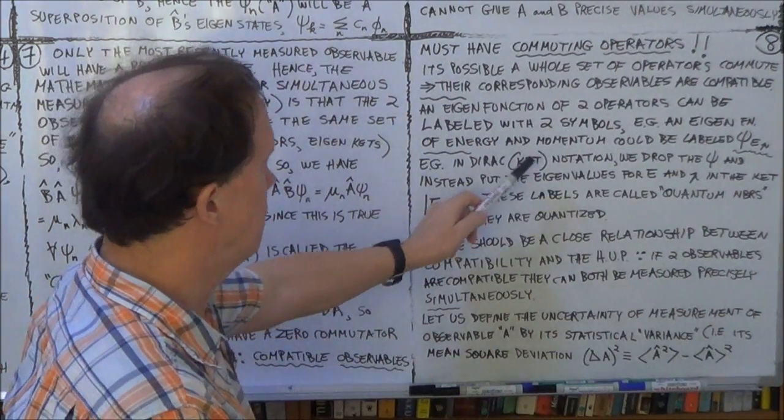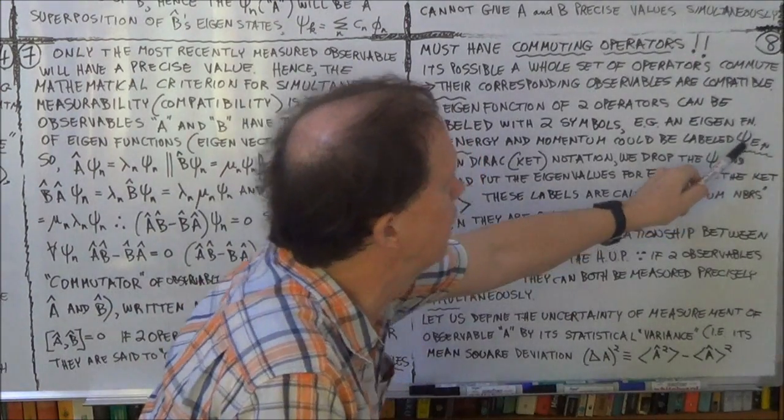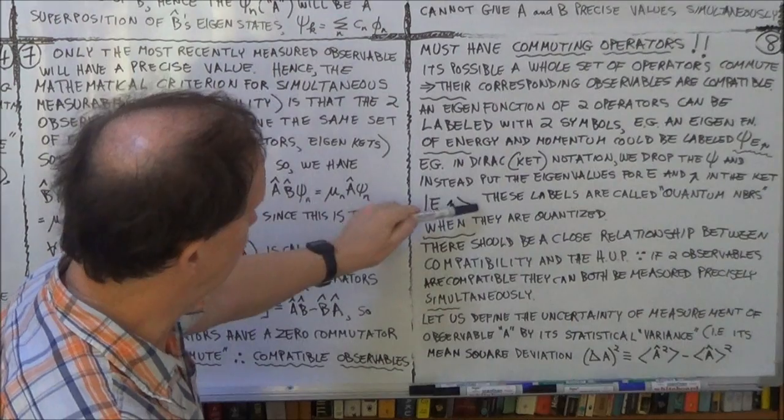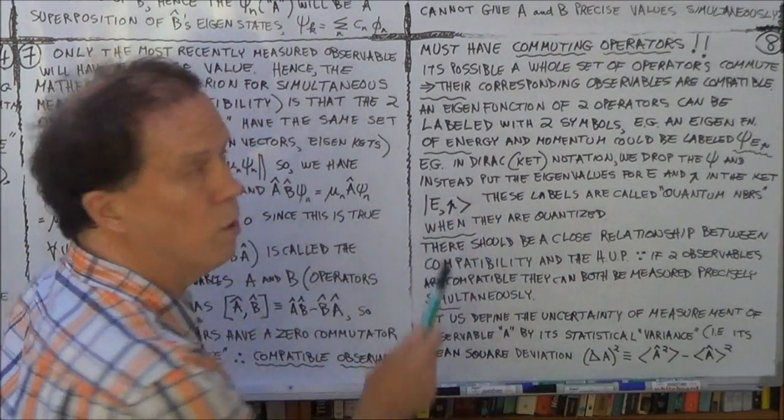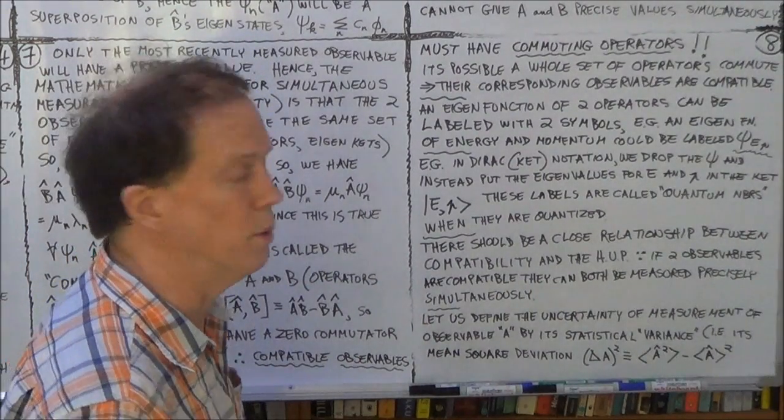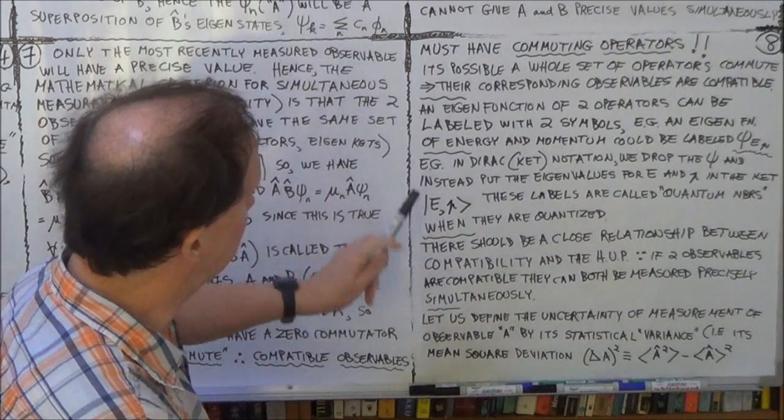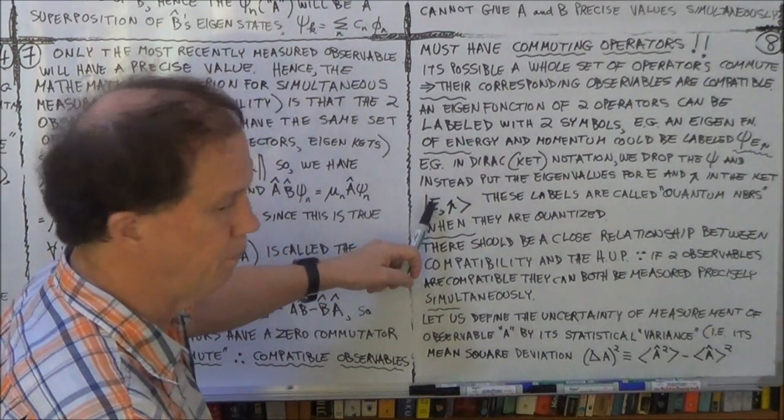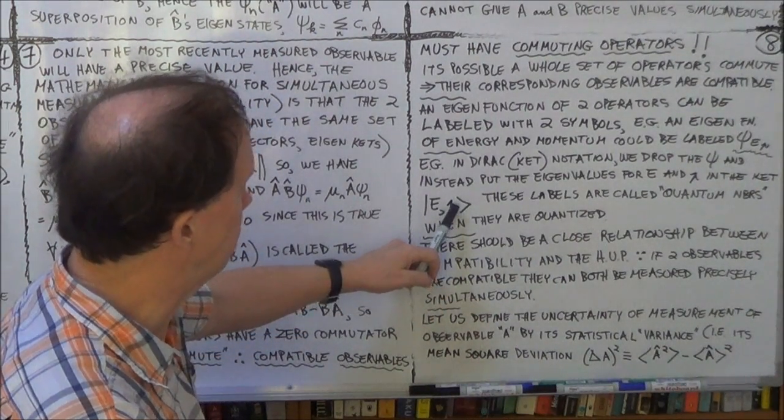Now, in the Dirac notation, this is sort of shorthand - you tend to forget about the psi, you don't even use it. You use your usual Dirac angular bracket notation, now this is usually called a ket. We've done that before, so a bit of revision here. So you can label your ket now by the value of the energy that you measured, and the value of the momentum that you measured.